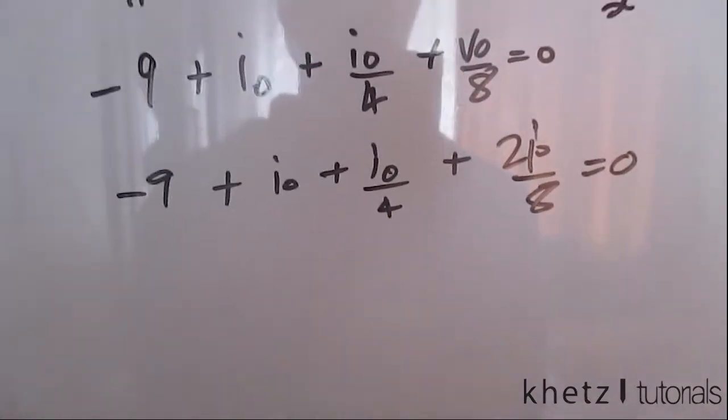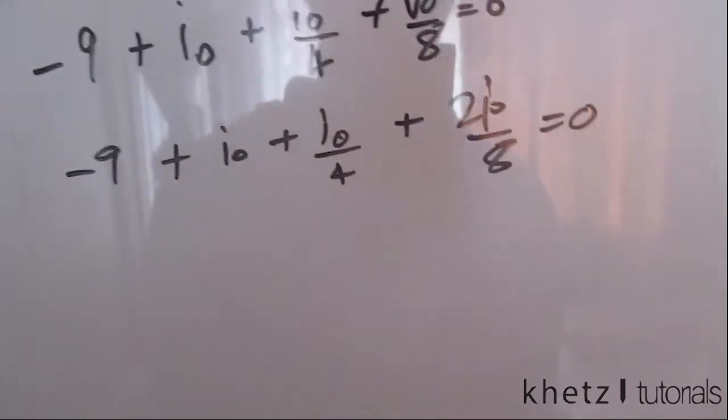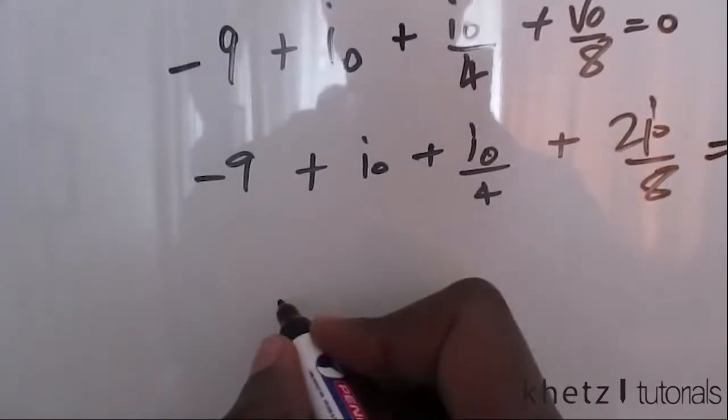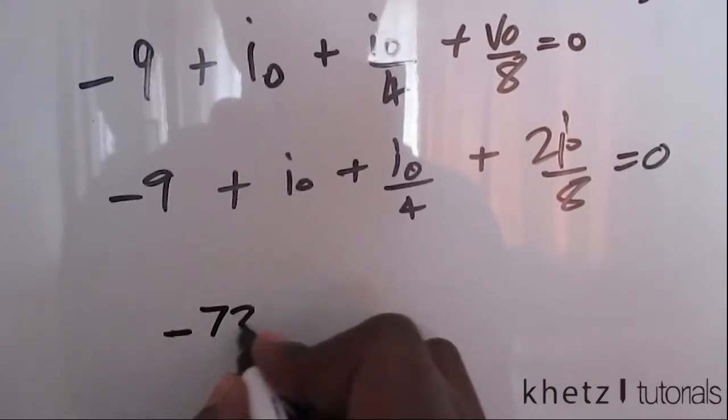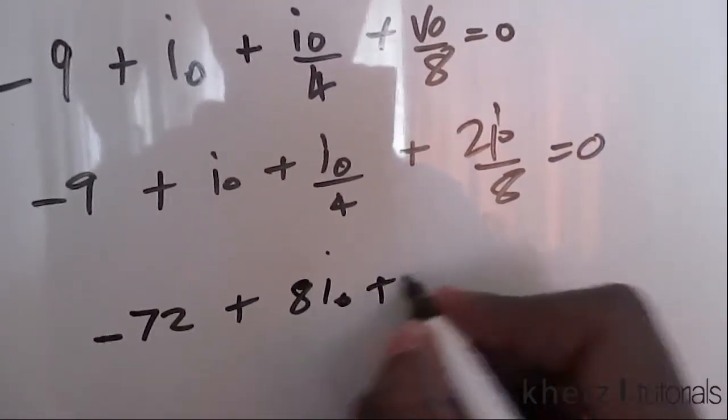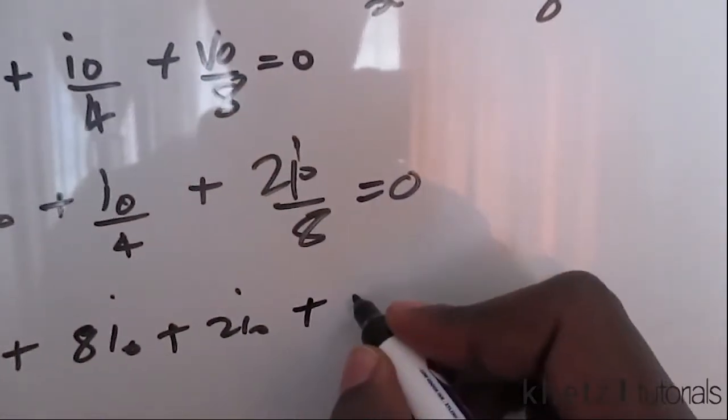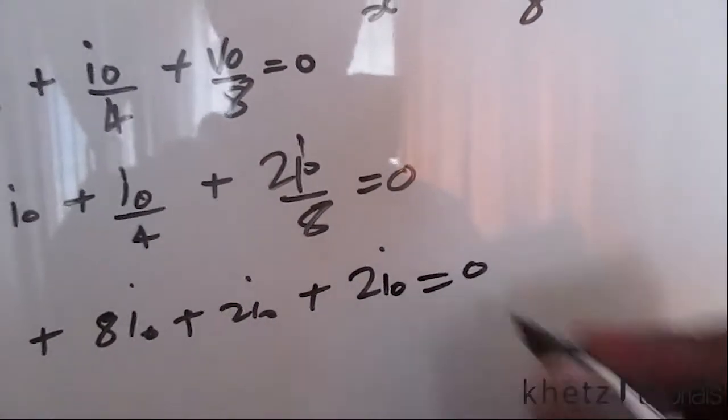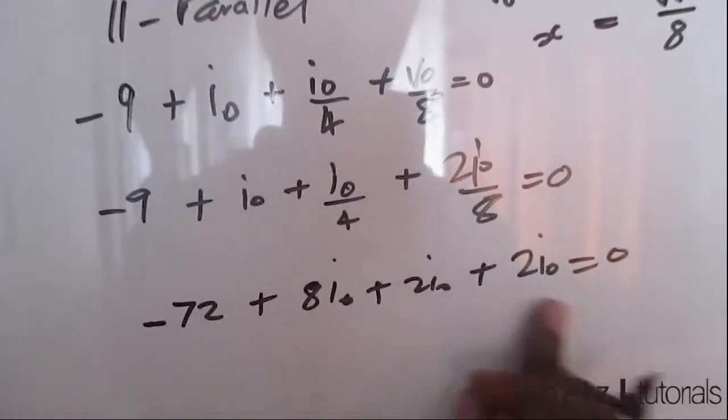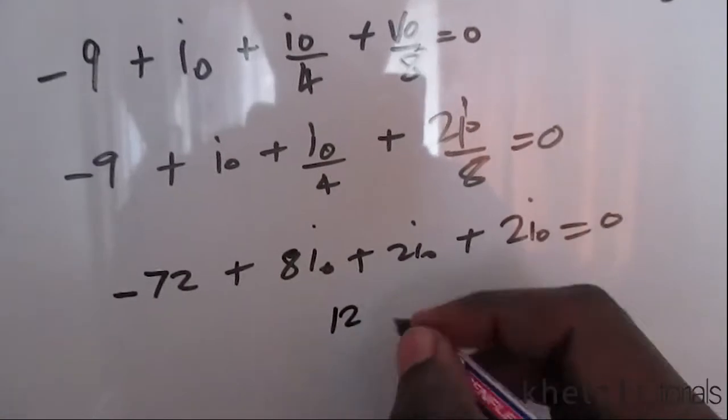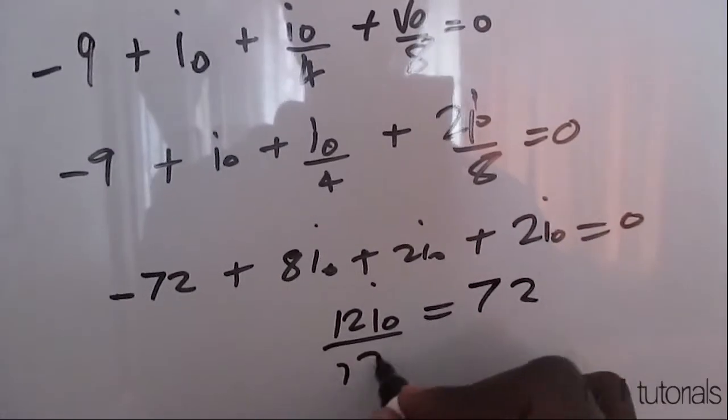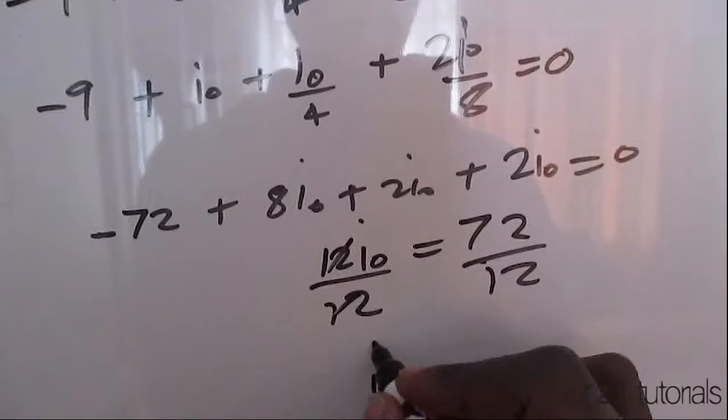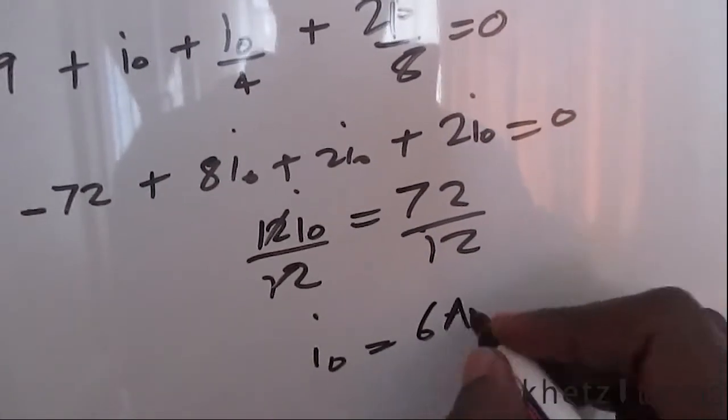Now we can solve for i₀. Multiplying through we have eight times nine which is 72. Considering the negative sign we have negative 72, and then multiplying through by eight we have 2i₀, and we have 2i₀ again. Then we add these up so that's 12i₀ equals, taking the 72 to the other side, 72. Then dividing by 12 gives you six. So i₀ equals six amperes. That is your answer for i₀. We solved one part of the question.